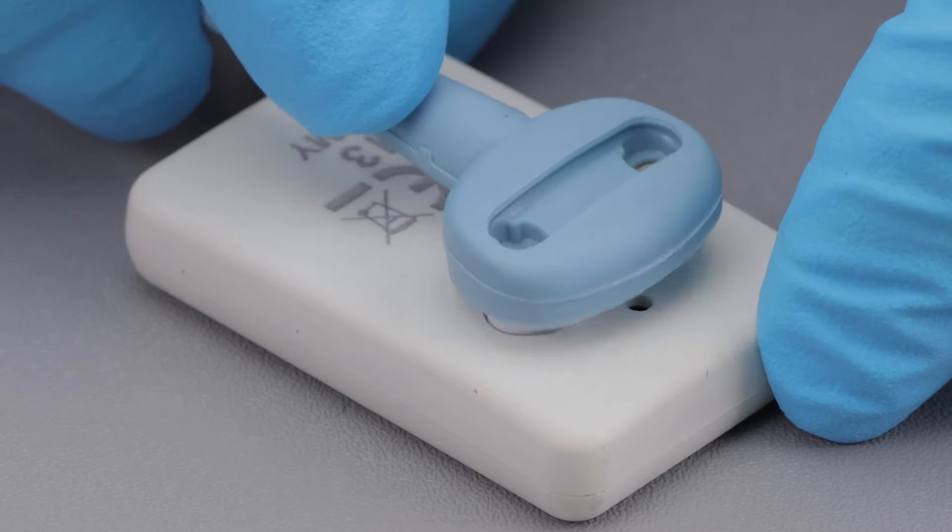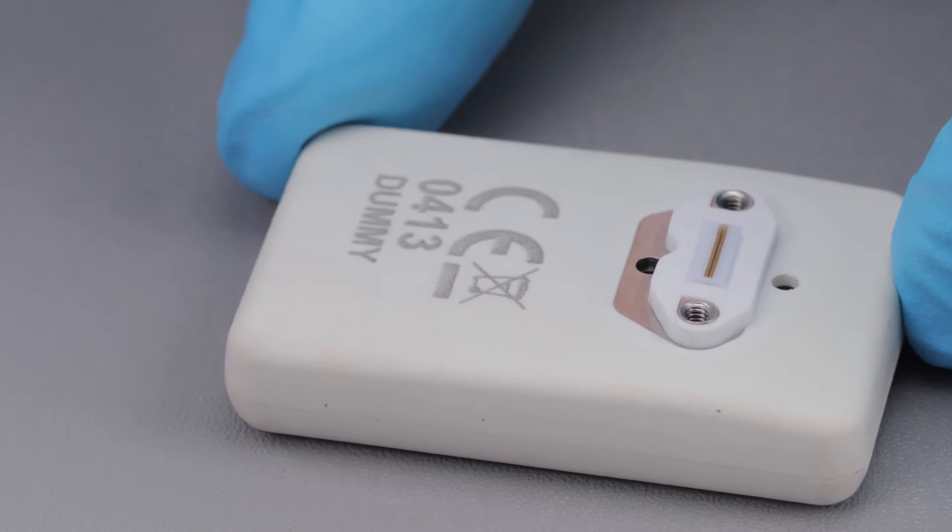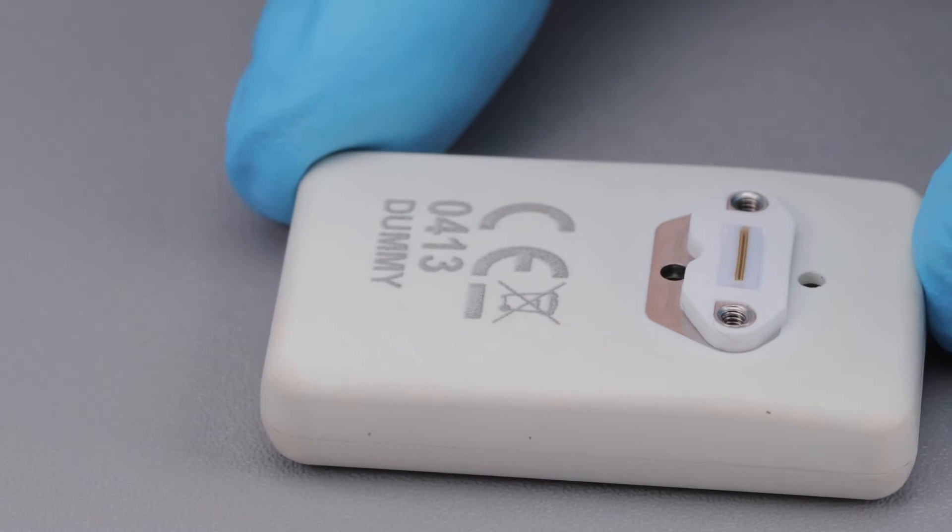Now remove the cable from the sensor. After removing the cable, you will notice an elastomer, or frame and strip, that helps connect the cable to the sensor.